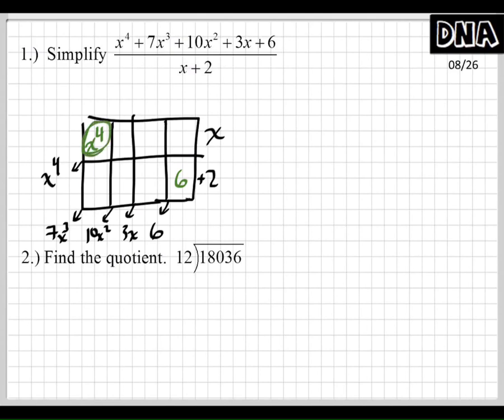Now, we get this by going this number times this number. And our answer is going to be up here. That's what we're looking for. So, what times x will give me x to the 4th? Shout it out. x to the 3rd power. Very nice. And we can also find this one because we have the 6 right here. What times 2 gives me 6? 3.